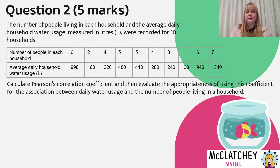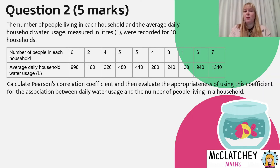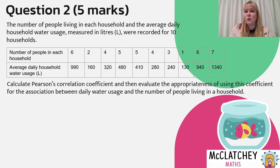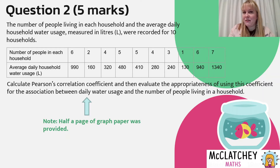This was worth five marks. The number of people living in a household and the average daily household water use measured in litres was recorded for 10 households. We've got a table with some data and the question asks us to calculate Pearson's correlation coefficient and then evaluate the appropriateness of using this coefficient for the association between daily water usage and the number of people living in a household. This is a bivariate data analysis question, so we're in unit three. Something very important to note is that half a page of graph paper was provided.